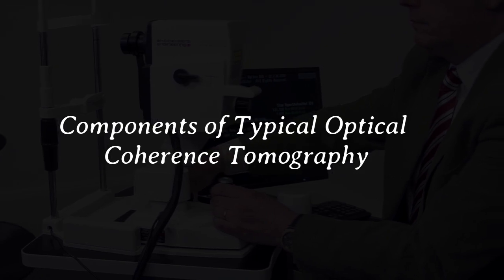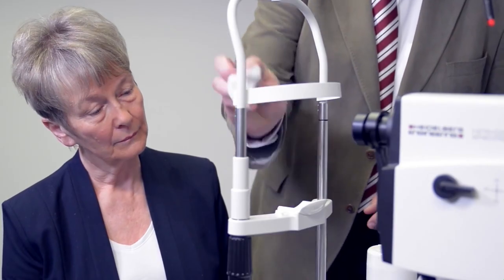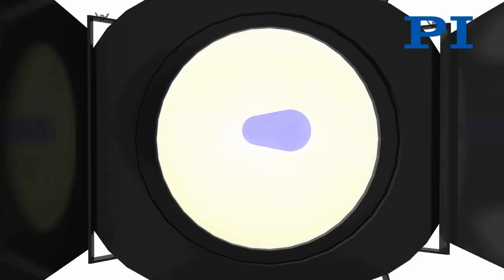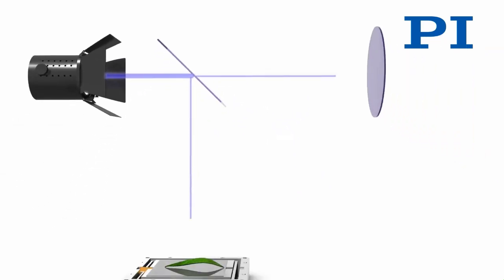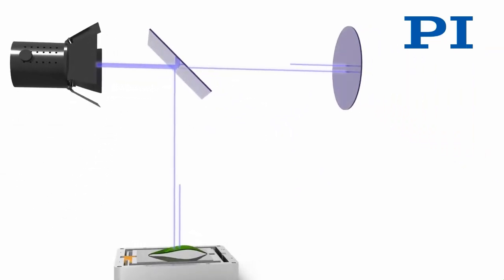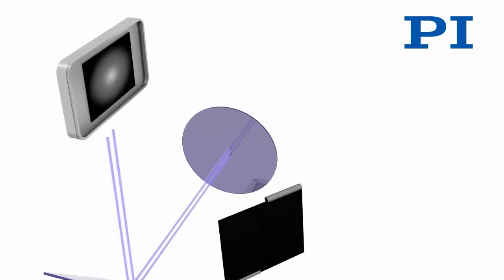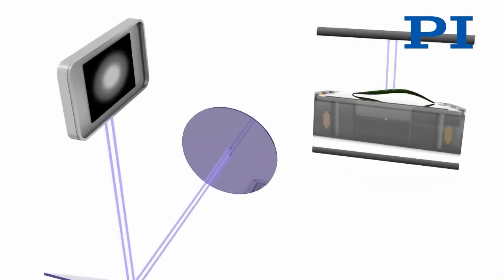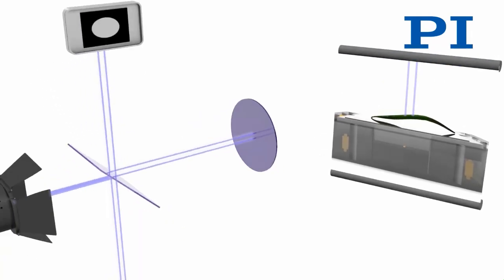The principle of OCT is white light, or low-coherence interferometry. The optical setup typically consists of an interferometer with a low-coherence, broad-bandwidth light source. Light is split into and recombined from reference and sample arms, respectively. Scanning the light beam on the sample enables non-invasive cross-sectional imaging up to three millimeters in depth with micrometer resolution.